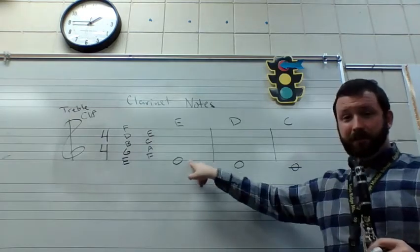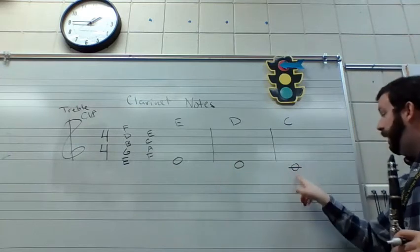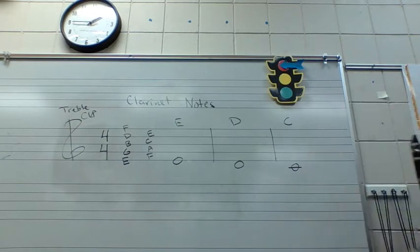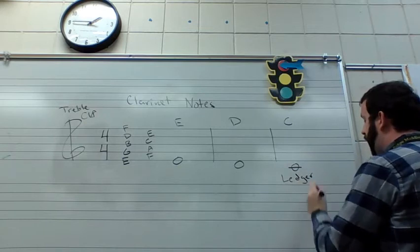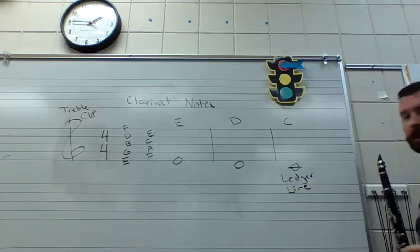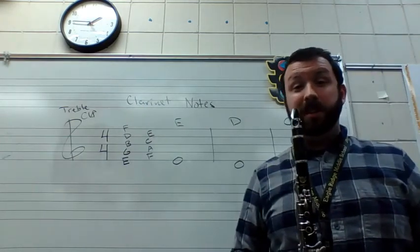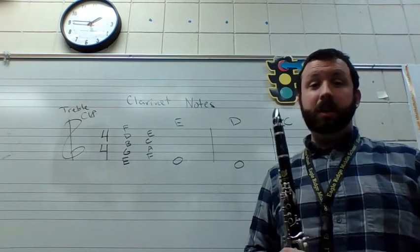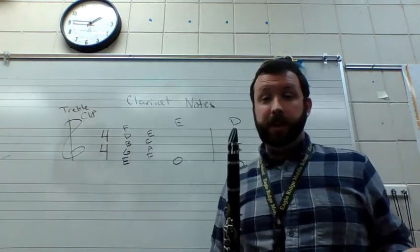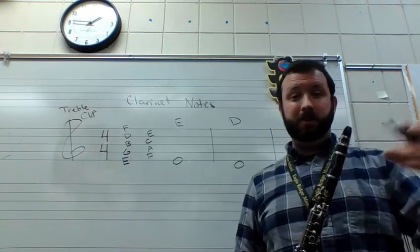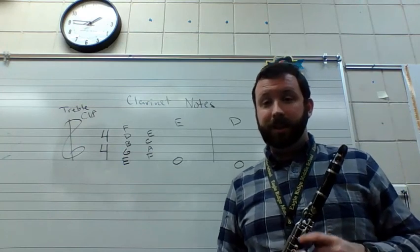To review: E is the first line of the staff, D is below the first line of the staff, and C is on that first ledger line below the staff. Just so you're curious, L-E-D-G-E-R is how you spell ledger line. Those are the three notes that we learned, as well as the system we use to know where notes are on both the lines and the spaces of the staff. Please let me know if you have any questions. You can now finish up that Google form. Good luck!